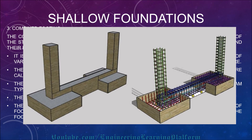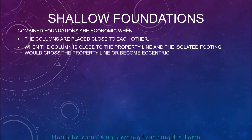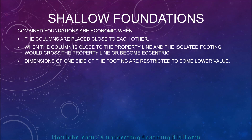A picture shows combined footing with a strap beam, including a reinforced example. Combined footings are economical when columns are placed close to each other, when columns are close to the property line and isolated footing would cross the property line or become too eccentric, and when dimensions of one side of the foundation are restricted to a low value.